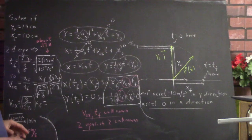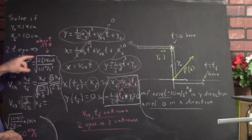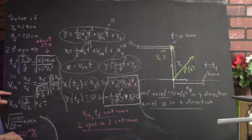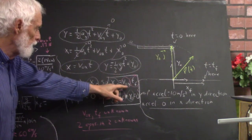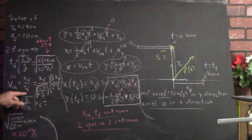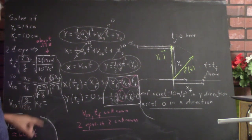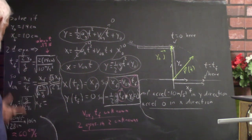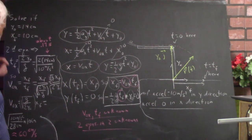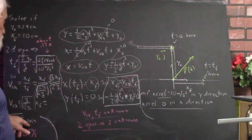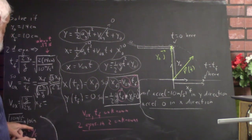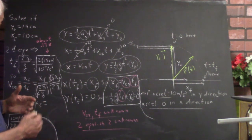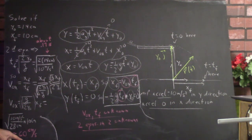Find it yourself — make sure you're careful about the units. After we get 0.17 seconds for t-sub-f, we plug that into our x-equation. The initial velocity v-naught-x equals x-sub-f divided by t-sub-f. With 10 centimeters divided by approximately 0.17 seconds, we get something close to 60 centimeters per second.